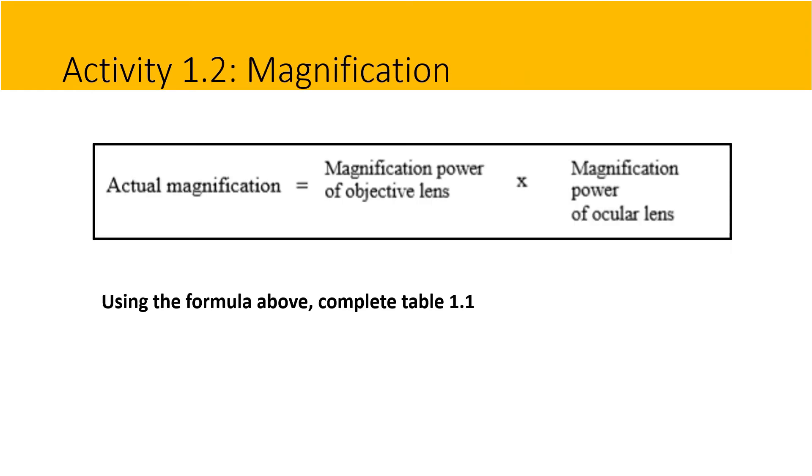Activity 1.2: magnification. Using the formula above, calculate the actual magnification by multiplying the magnification power of the objective lens to the magnification power of the ocular lens. Complete table 1.1.